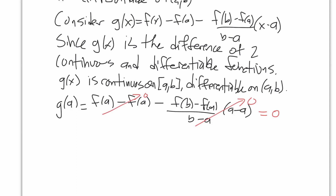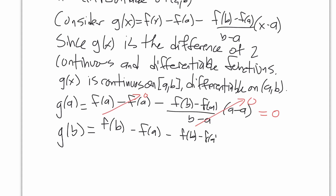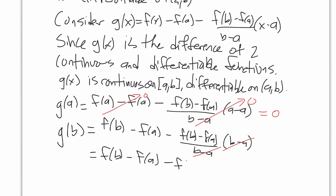What do you predict is going to happen for g(b) if we plug in b? Think about it — what's the difference between the function and its secant line at the right endpoint? We get f(b) minus f(a) minus f(b) minus f(a) over b minus a, times b minus a. The b minus a terms cancel, so we get f(b) minus f(a) minus f(b) plus f(a), which is just 0. Again, that should make sense: at the far right endpoint, there's no difference between the function and its secant line, so the distance is 0.